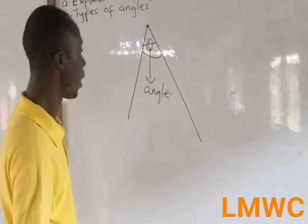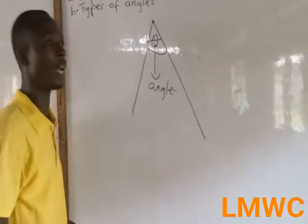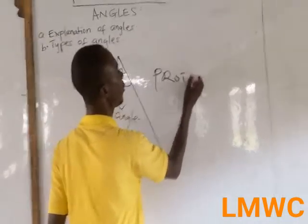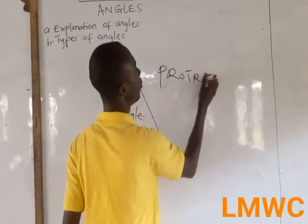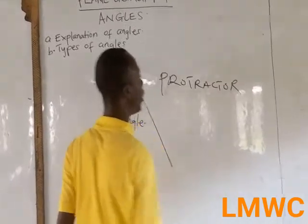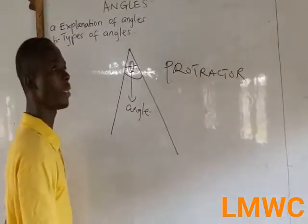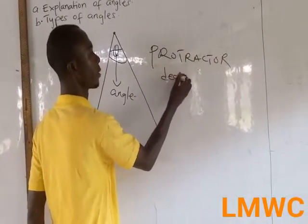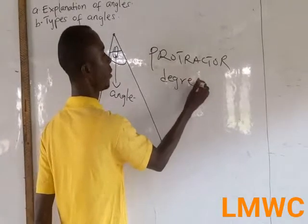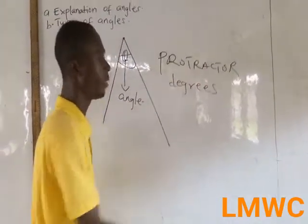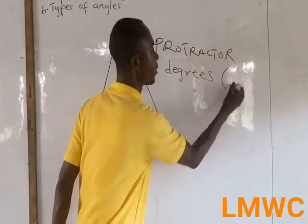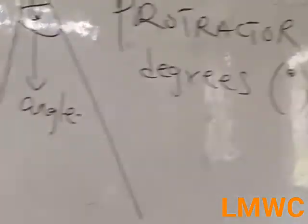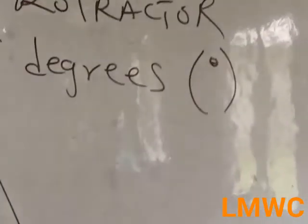The instrument for measuring angles is called a protractor, and angles are measured in degrees. The symbol for degree sign is this.